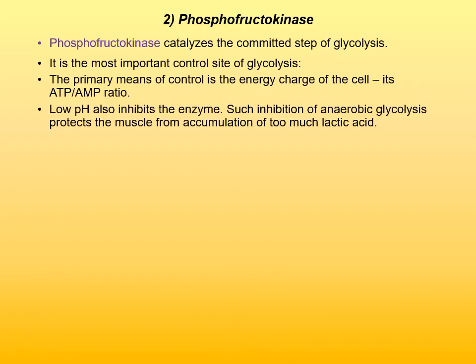Phosphofructokinase is the most important control site of glycolysis, and the primary means of control is the energy charge of the cell. The energy charge of the cell is indicated by the ATP-to-AMP ratio — it is important to understand it is ATP-to-AMP, adenosine monophosphate, not adenosine diphosphate. Also, low pH inhibits the enzyme. That is effectively inhibition of anaerobic glycolysis, because under anaerobic conditions in humans and mammals, when glycolysis occurs, lactic acid is produced — pyruvate is converted to lactic acid — and that results in low pH of the cell. If pH were to drop to really low values, that would damage the cell. So glycolysis stops to prevent damage from accumulation of too much lactic acid.